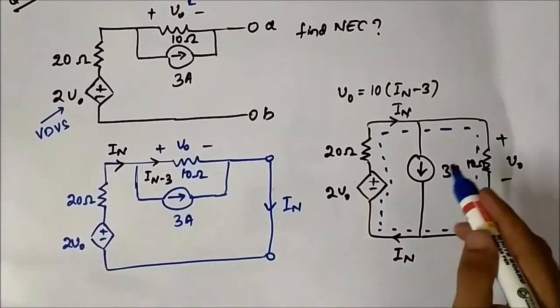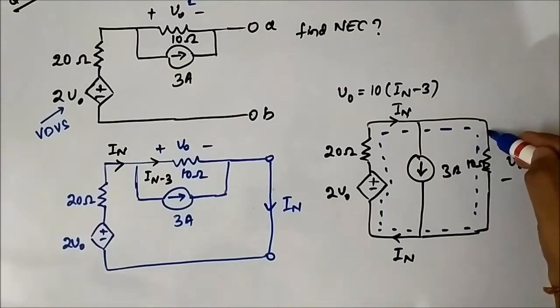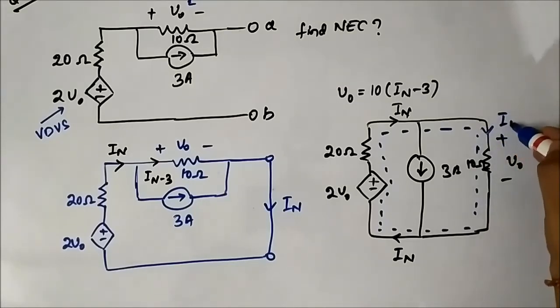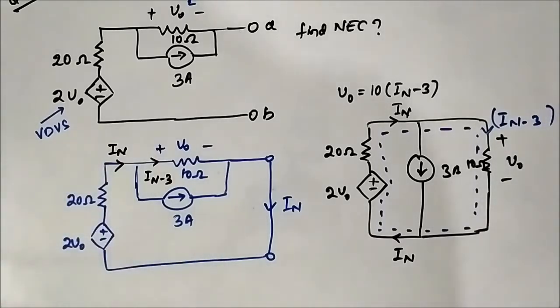The mesh currents are In and In minus 3. Applying KVL in this super mesh, we will get the equation.